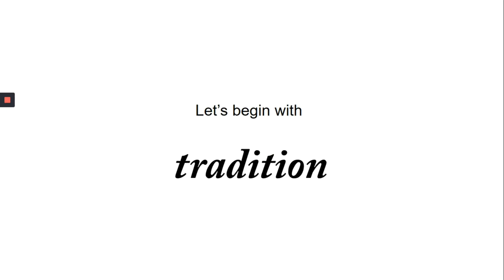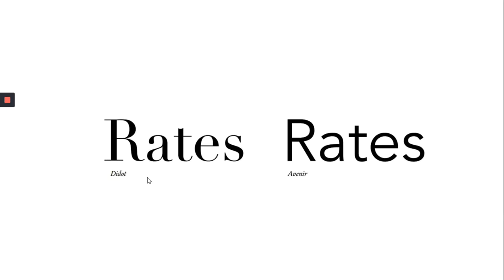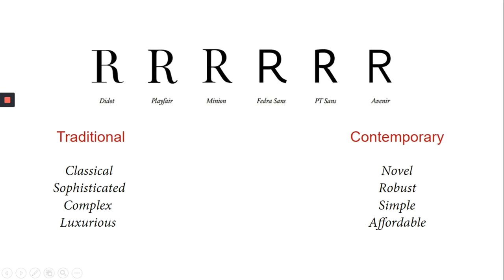Let me explain how you can communicate tradition. Look at these two typefaces — I think we can all agree that the first one is more traditional than the second one. We can put a lot of different typefaces on a spectrum, some of them being very traditional and therefore very complex, classical, sophisticated and luxurious, and the other part being very novel, robust, simple and affordable.